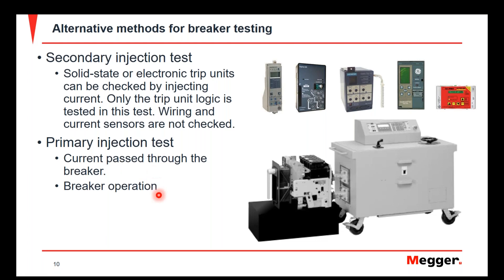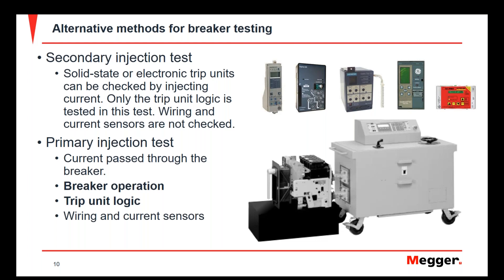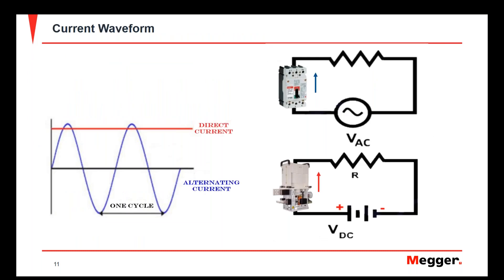Whenever we do primary current injection, we're testing the breaker's overall operation as well as checking the logic of the trip unit to make sure it's communicating properly with the other elements of the breaker, such as the current sensors and the wiring associated with the trip unit. In other words, a primary current injection test is a complete system test to verify that it's going to operate the way we want it to, ensuring reliable operation. We also need to consider the waveform we'll use for these primary current injection tests.